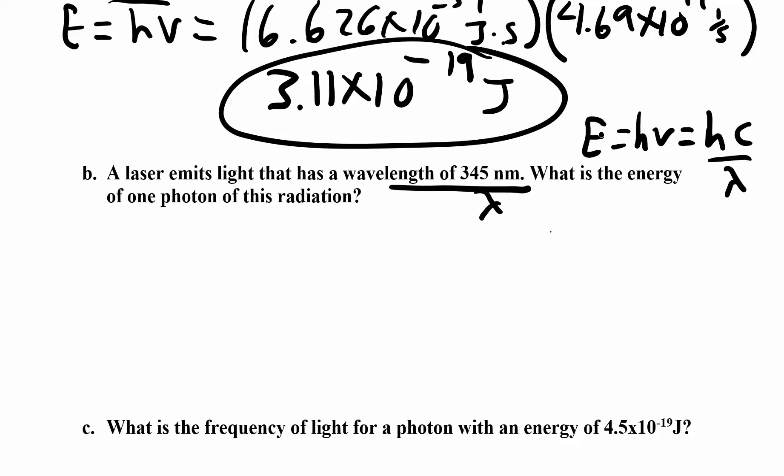The problem is c is in units of meters per second. So we're going to need to look at our units. We don't want to have nanometers here. We want to have meters. So we have to convert nanometers first. So we have 345 nanometers. And there are 1 times 10 to the 9 nanometers in 1 meter. So nanometers are really small.